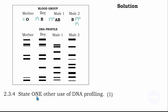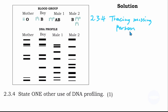The next question says: state one other use of DNA profiling. DNA profiling can be used to trace missing persons, to identify individuals with a genetic disorder, to establish family relations, and to identify criminals. There are many ways that DNA profiling can be used.